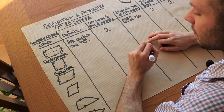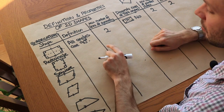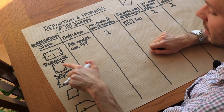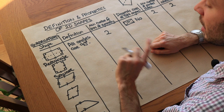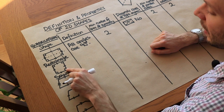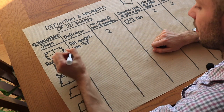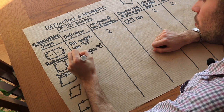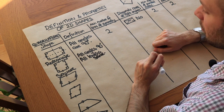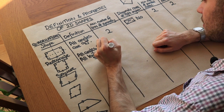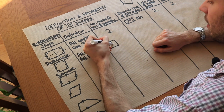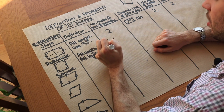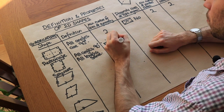A square is a special case of a rectangle. It satisfies the rectangle definition — all angles are 90 degrees — but has the additional restriction that all sides are the same length. The minimum number of lines of symmetry for a square is four: two through the midpoints of opposite sides, and two along the diagonals.